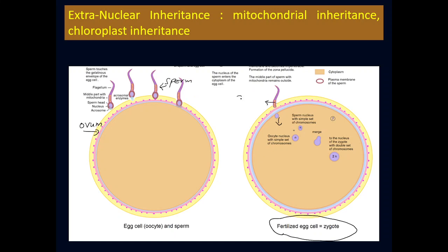The sperm contributes its genetic material in terms of 23 chromosomes, and similarly the ovum contributes its own 23 chromosomes, so altogether it produces 46 chromosomes. This I have explained in my previous genetic lecture series.